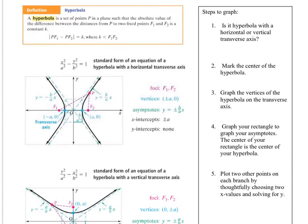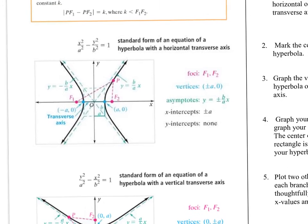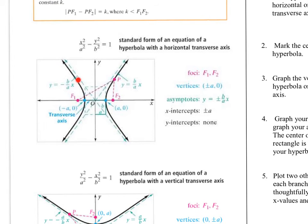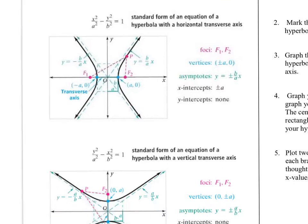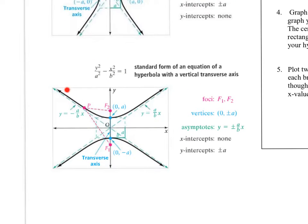A hyperbola can open up either on the x-axis or the y-axis. If it's opening side to side, x squared is positive and y squared is negative. Remember, with the ellipse there was an addition sign in between. For a hyperbola, either x squared is positive or y squared is positive — not both. If it's going side to side, x squared is positive and y squared is negative. If it's going up and down, y squared is positive and x squared is negative.